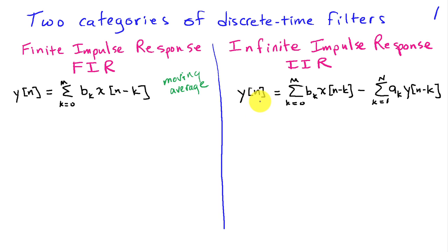In an IIR filter, in contrast, we have recursion. We not only have the past inputs, a weighted combination of those, but we also have a weighted combination of the past outputs. And this is where one gets the infinite nature of the impulse response, because these recursions where present value of y depends on past values of y will last, in theory, forever in terms of the impulse response.